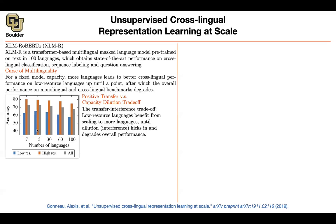Quantitatively speaking, this is what is happening. If you have seven languages and you look at accuracy of a classification task — maybe sentiment analysis — the low-resource language is the blue bar. The high-resource languages are the orange bars, and this is the overall across all seven languages. The accuracy of the low-resource language increases as you increase the number of languages included, and then it goes down. The high-resource language result is less surprising — the more languages you introduce, the more you hurt the high-resource language.